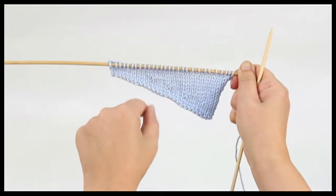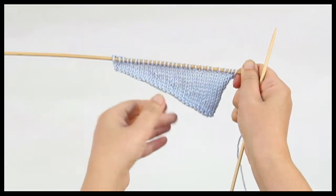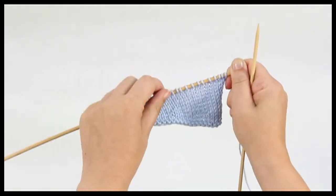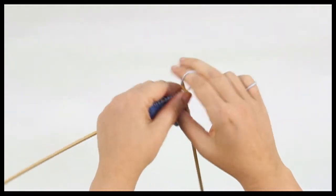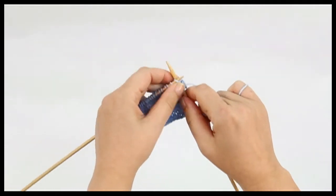Short row shaping is a technique which enables us to work a part of our row without working the whole row. This means we can create a piece of knitting where one side of our work is longer than another, as shown here.